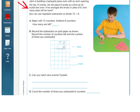So it says, John is building a backyard pizza oven with an arch opening. He has 72 bricks. He will place six bricks at a time as he builds the oven. If he arranges the bricks in piles of six, how many piles will he have? And so it says you can use repeated subtraction to divide 72 divided by six.